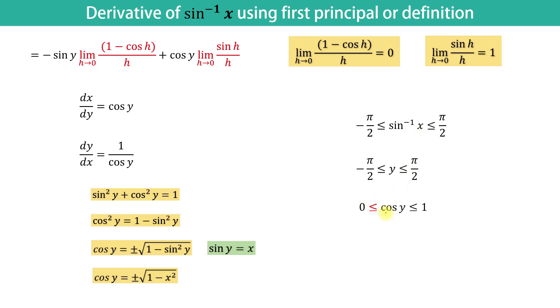This implies cos y lies in closed interval 0 and 1 because y is an angle which lies in first and fourth quadrant only. But one thing to note: since cos y is in the denominator of dy over dx, it cannot be equal to 0.